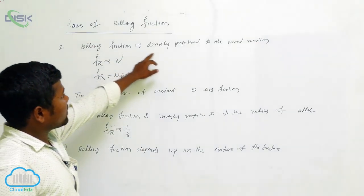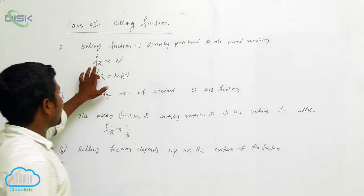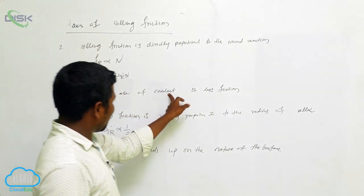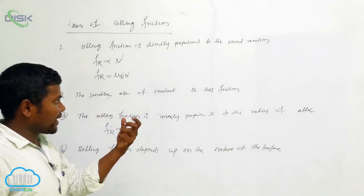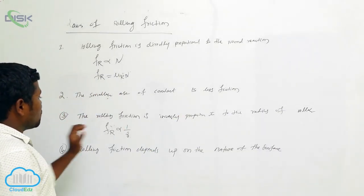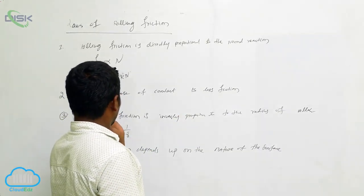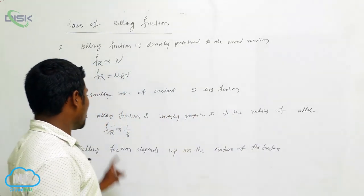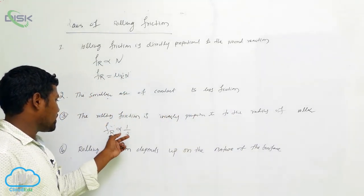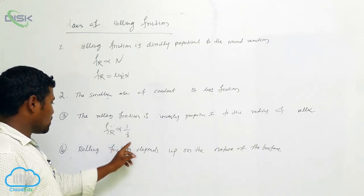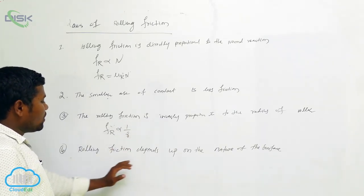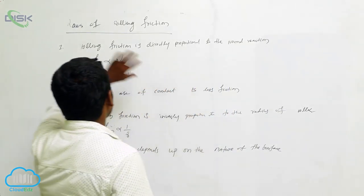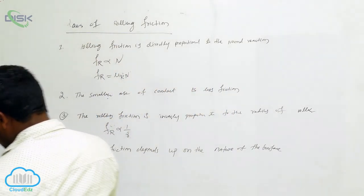To recap the laws of rolling friction: first, rolling friction is directly proportional to the normal reaction N. Second, smaller area of contact gives less friction. Third, rolling friction is inversely proportional to the radius of the roller, Fr ∝ 1/r. Fourth, rolling friction depends upon the nature of the surface.